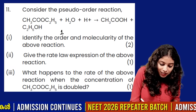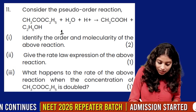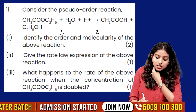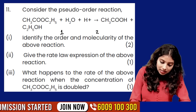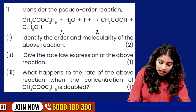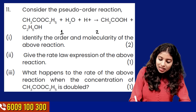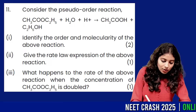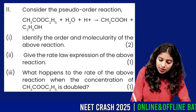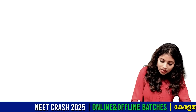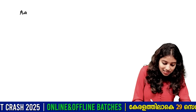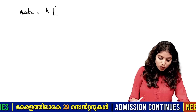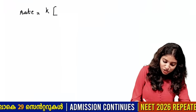Molecularity: there are 2 molecules involved, so molecularity is 2. Now, give the rate law expression for the above equation. Rate is equal to K into the concentration of the reactant — the ester concentration.